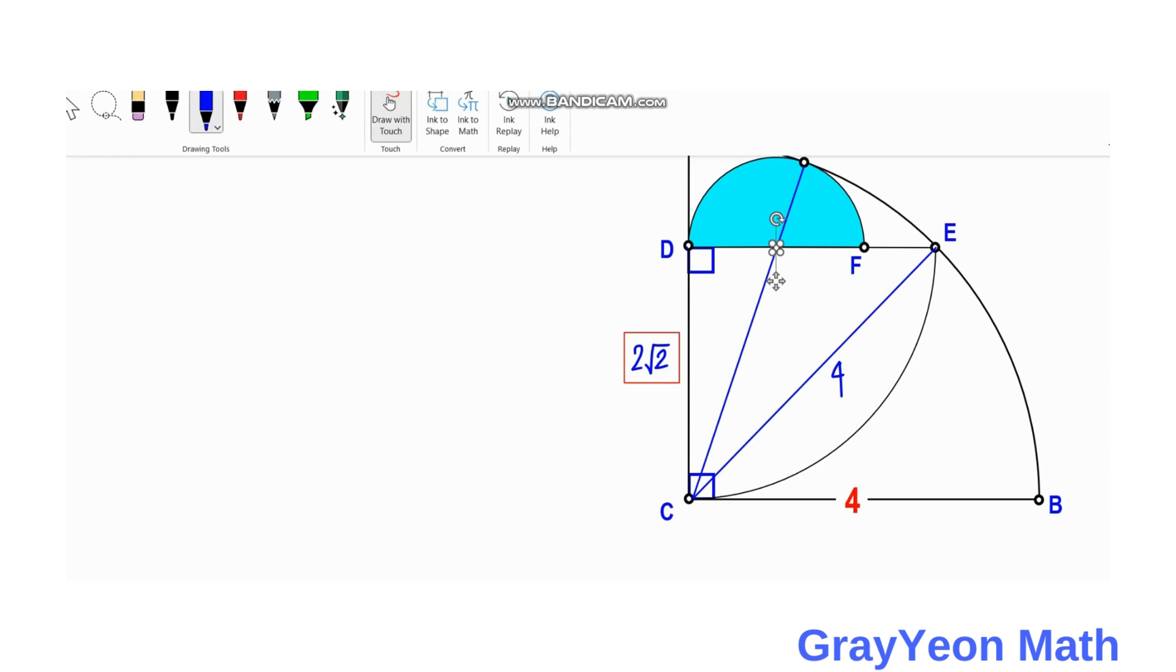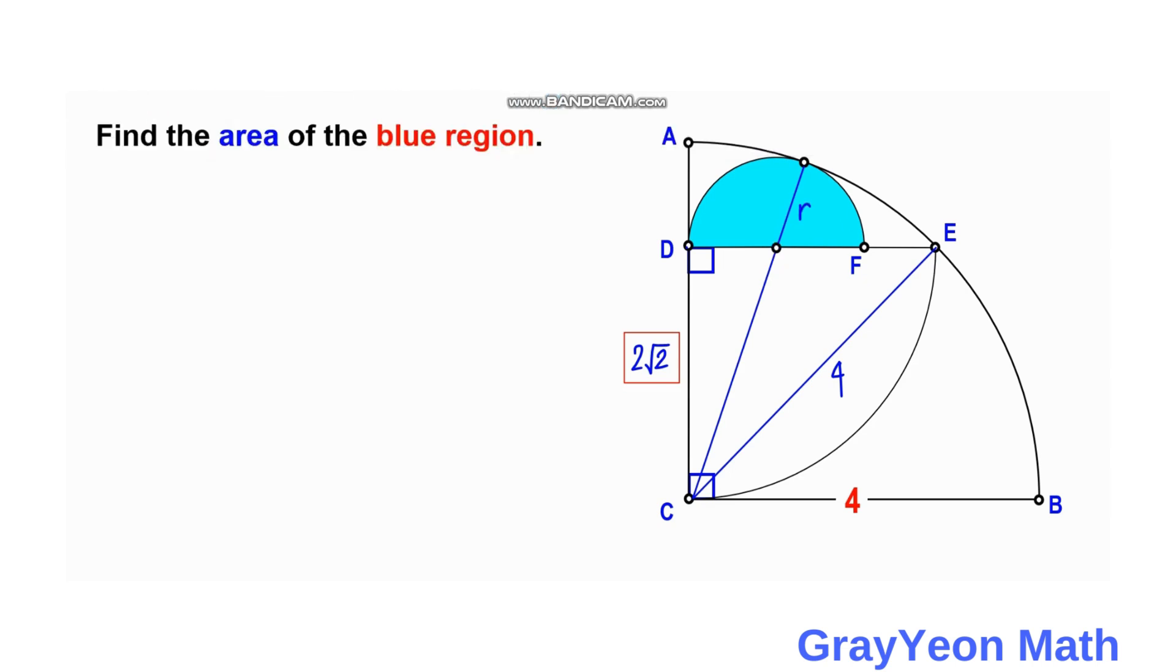Therefore, this segment will be r. Let's call this the radius of the semicircle. So this will be 4 minus r.